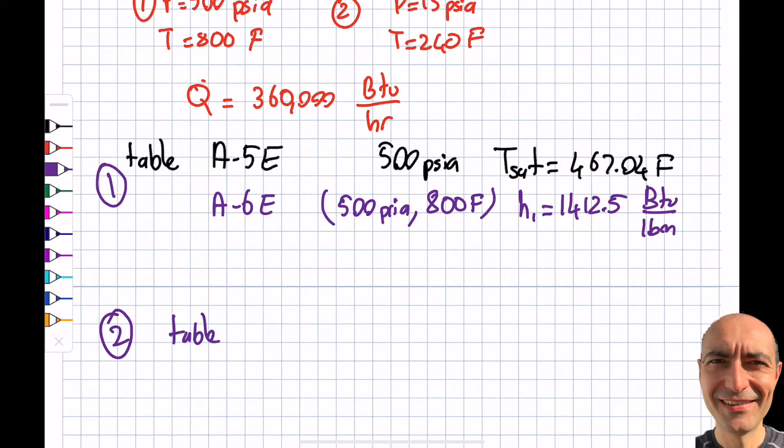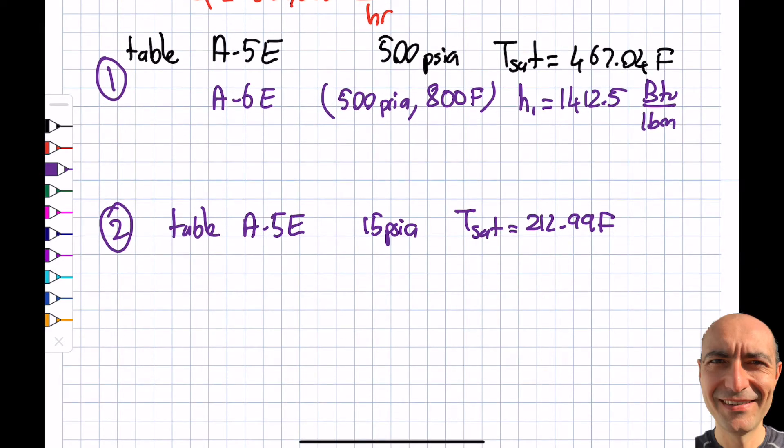I go to the superheated vapor Table A-6E. I read 500 psia, 800°F listed there, and I get h1 equals 1412.5 Btu/lbm. The good news is I also have the exit state given to me. I go to Table A-5E again, this time I look at 15 psia, which is barely above atmospheric pressure, and I get my saturated temperature of 212.99°F. My temperature is given as 240°F. Definitely I will be in the superheated region, but not as far into the superheated region as the inlet, which makes sense. That's how I can extract the energy.